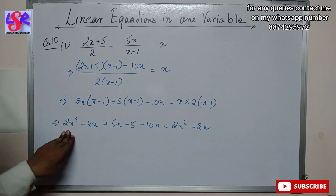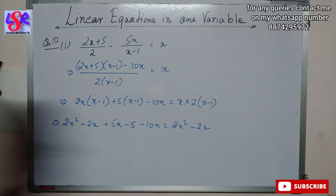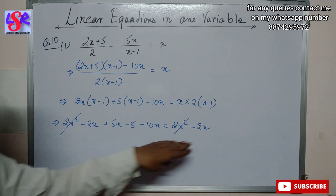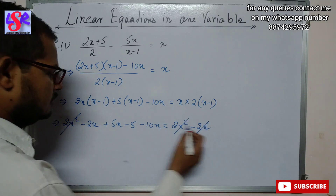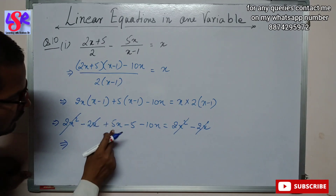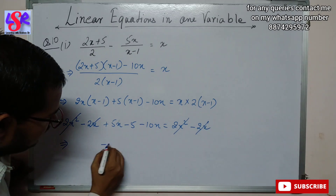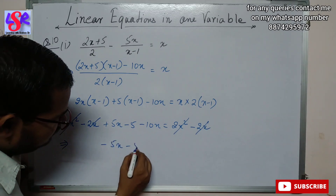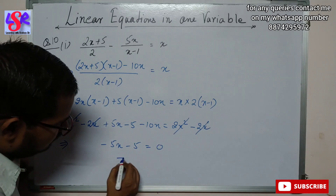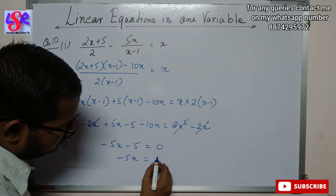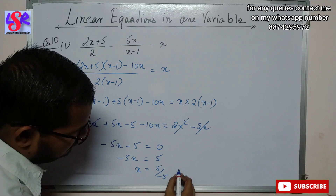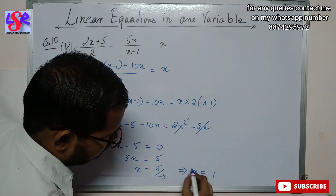We can see 2x² appears on both sides and cancels. Similarly -2x cancels. The remaining terms give 5x - 10x = -5x = -5. Putting -5 on the other side: -5x = 5, so x = 5/(-5) = -1 as the answer.